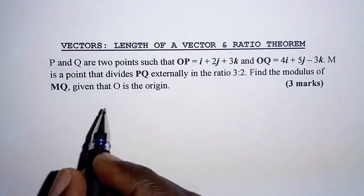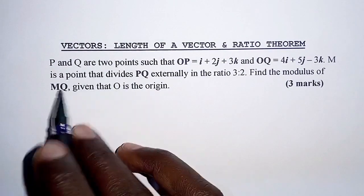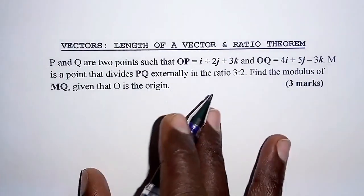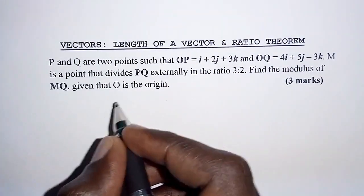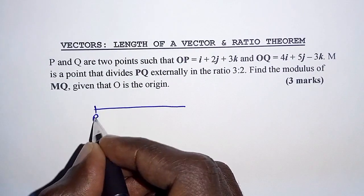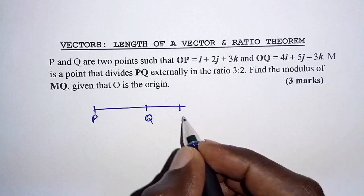The first thing I want us to interpret here is this ratio. We are told that M divides PQ externally in the ratio 3 to 2. If M divides externally, then for PQ, M must be somewhere outside PQ.